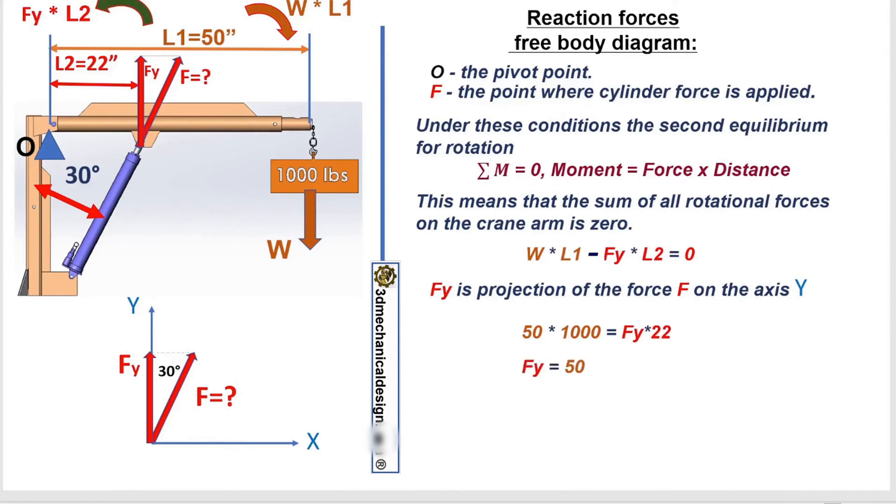Fy equals 50 times 1000 divided by 22. Fy equals 2272.7 pounds.